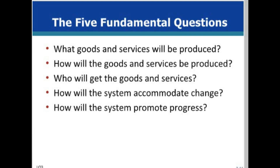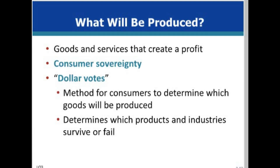These five questions highlight the economic choices underlying the production possibilities model. All economies, whether a market system or otherwise, must address these questions. Profit is the difference in total revenues and total costs. In a market system, the consumer ultimately decides what will be produced through their dollar votes for a product. If there are not enough votes for a product, the firm will cease production. Businesses must match their production choices with consumer choices, or else face losses and bankruptcy.